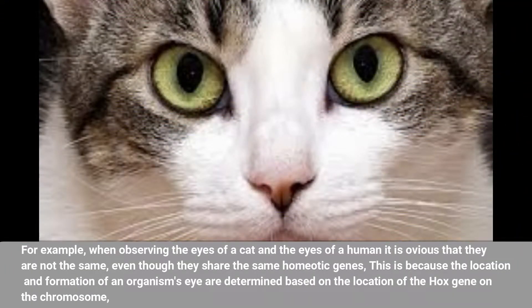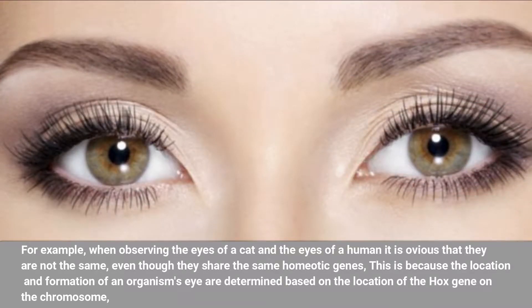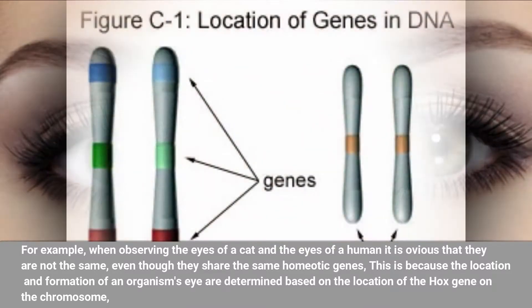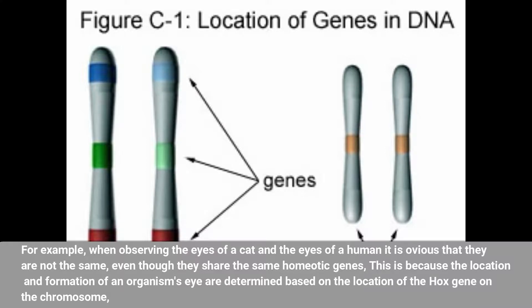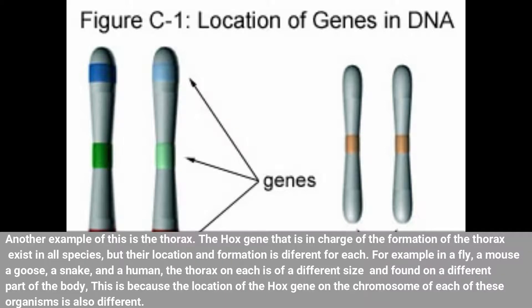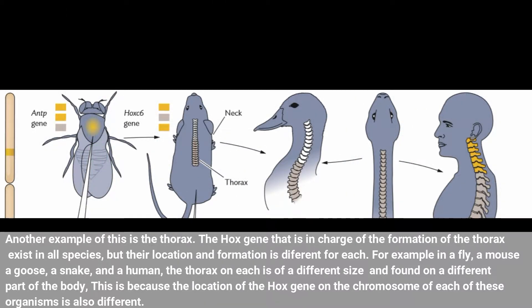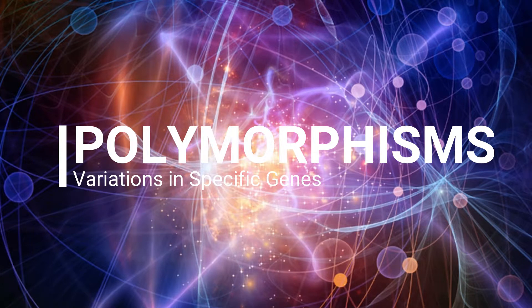For example, when observing the eyes of a cat and the eyes of a human, it is obvious that they are not the same, even though they share the same homeotic genes. This is because the location and formation of an organism's body parts are determined based on the location of the hox gene on the organism's chromosome. Another example is the thorax — the hox gene in charge of the formation of the thorax exists in all species, but its location and formation is different for each. In a fly, a mouse, a goose, a snake, and a human, the thorax is of a different size and found on a different part of the body, because the location of the hox gene on the chromosome of each organism is also different.